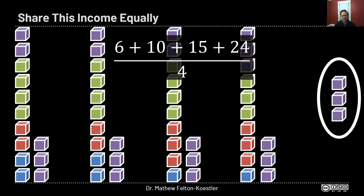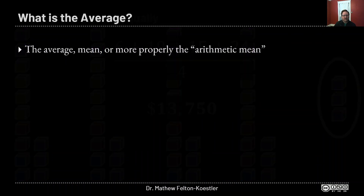We also have three extra blocks, and if we chop them into fourths and share them, each person gets three-fourths extra, so each household would get thirteen thousand seven hundred fifty dollars. This equation should look familiar — it's the formula for finding the mean: we add up all our data points and divide by how many data points we have. This highlights what the mean actually tells us — what would happen if we tried to share this equally.